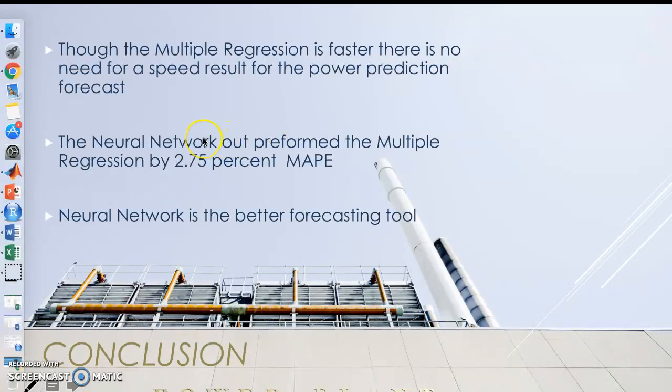Although the multiple regression is faster, we do not need a speedy result for our neural network. It is better to have the robust model that has a better fit. It has a better fit by 2.75% MAPE in absolute percent error. So the neural network is the better forecasting tool.